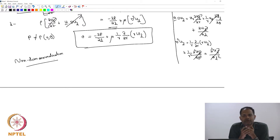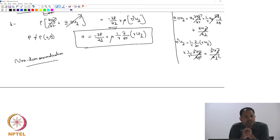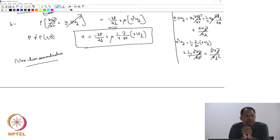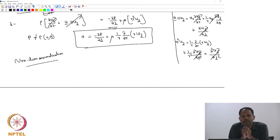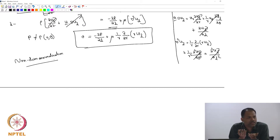What is meant by non-dimensionalization? You are going to make all the variables non-dimensional. For example, what is the dimension of velocity? It is just length per time. You want to make it a non-dimensional quantity — that means you get rid of the units from it. So we will non-dimensionalize each term. How can we get rid of the dimensions of velocity? You have to divide it with another quantity which has the units of velocity.